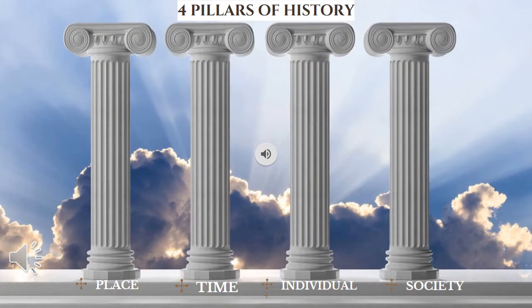History is a coherent account of the significant past events in the progress of human culture. Time, place, society and individuals are the four major pillars of history. We cannot write history without them. Of these four components, place is related to the geography or geographical conditions.